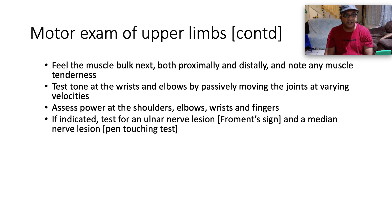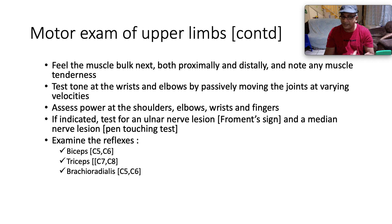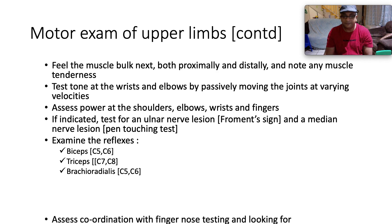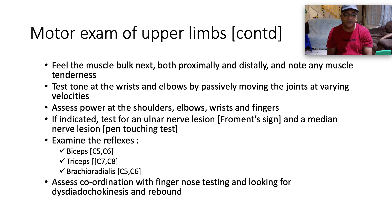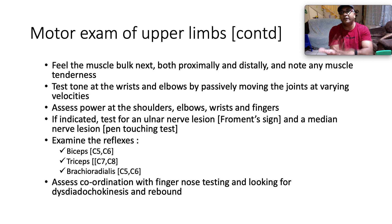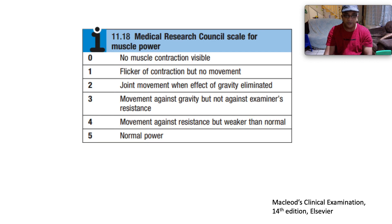If indicated, test for an ulnar nerve lesion using Froment's sign and a median nerve lesion using the pin-touching test. Examine the reflexes: biceps at spinal level C5-C6, triceps at C7-C8, and brachioradialis at C5-C6. Lastly, assess coordination with finger-nose testing and look for dysdiadochokinesis, dysmetria, and rebound.